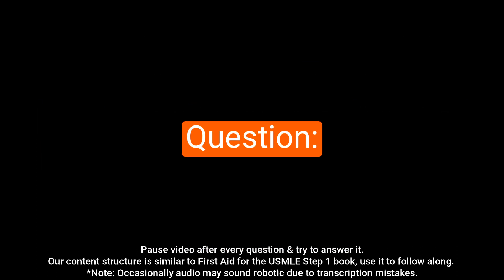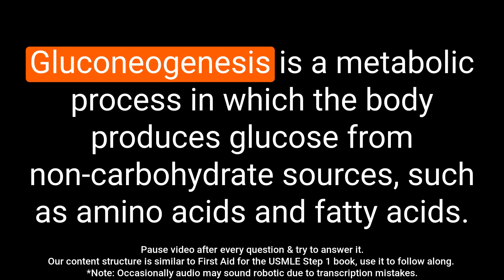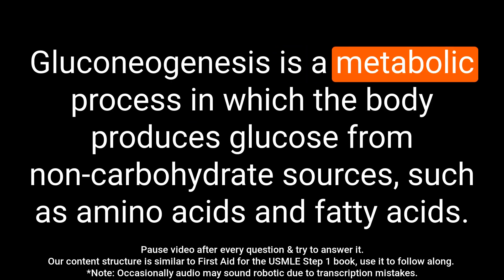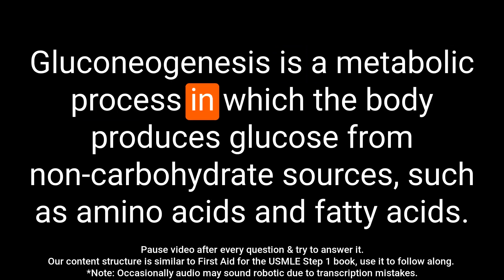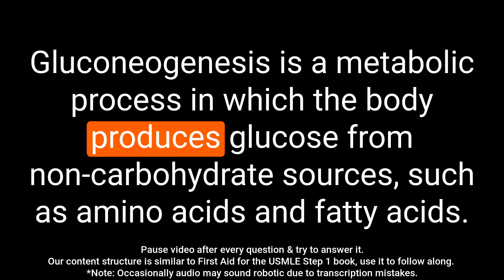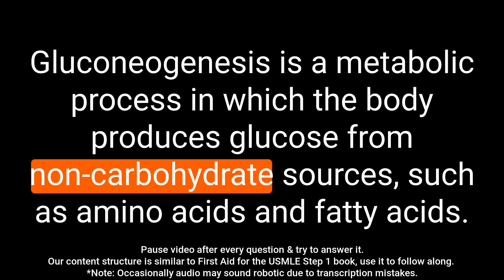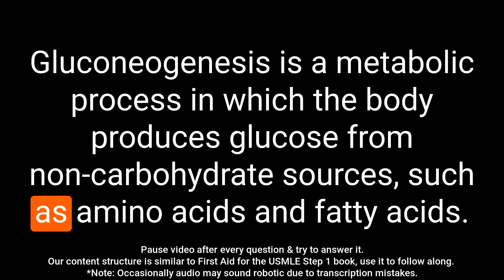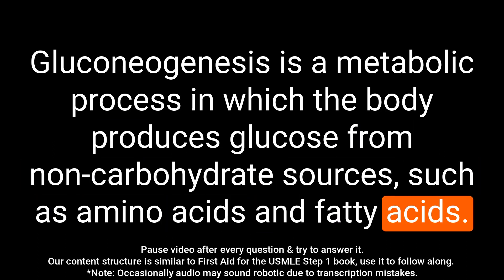Question: What is gluconeogenesis? Answer: Gluconeogenesis is a metabolic process in which the body produces glucose from non-carbohydrate sources, such as amino acids and fatty acids.